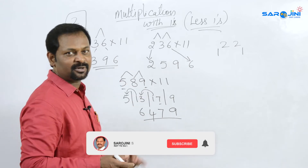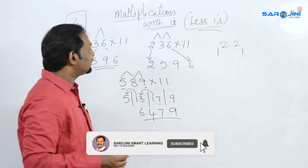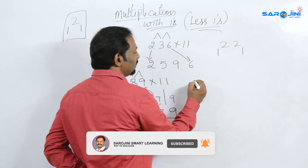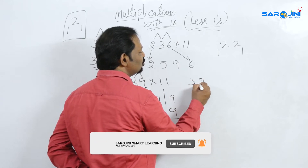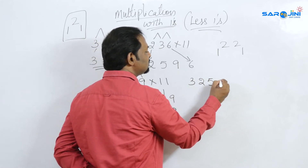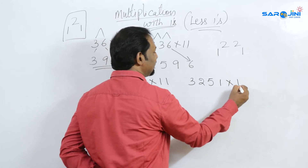It is simple. Now, 3,251 is multiplied by 11.